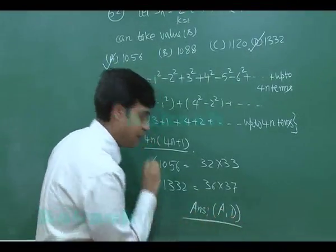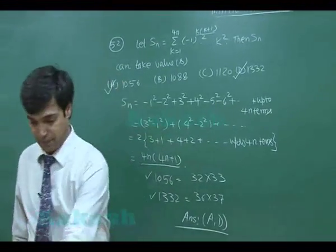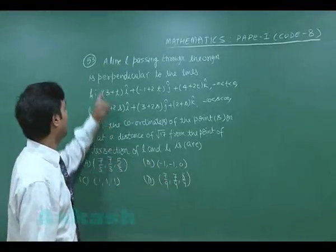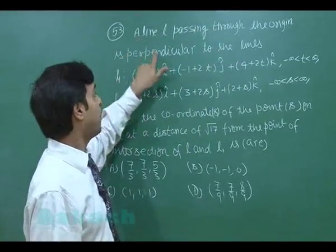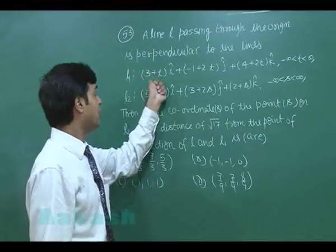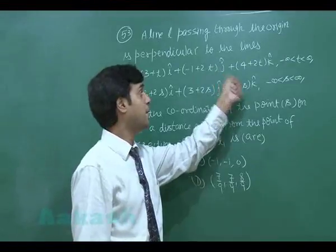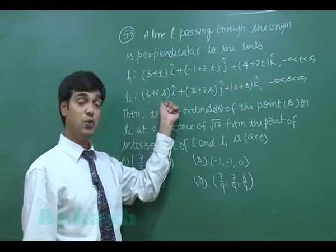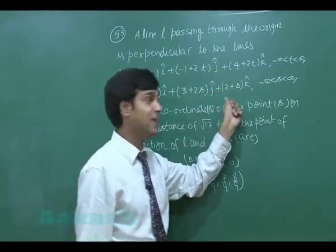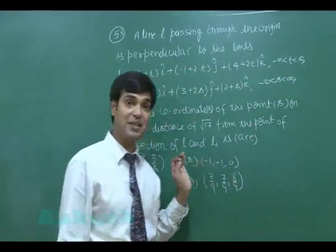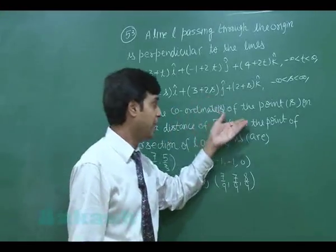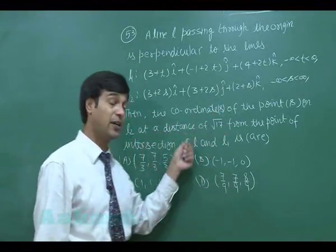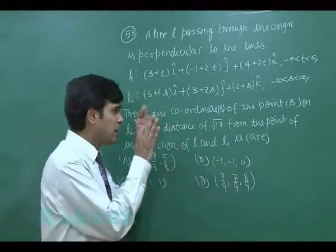Question 53: A line L passing through the origin is perpendicular to two lines L1: (3+t)î + (−1+2t)ĵ + (4+2t)k̂, t ∈ (−∞, +∞), and L2: (3+2s)î + (3+2s)ĵ + (2+s)k̂, s ∈ (−∞, +∞). Find the coordinates of points on L2 at a distance of √17 from the point of intersection of L and L1.